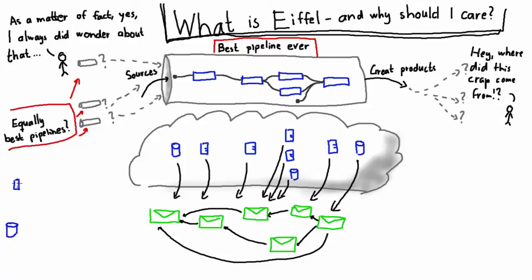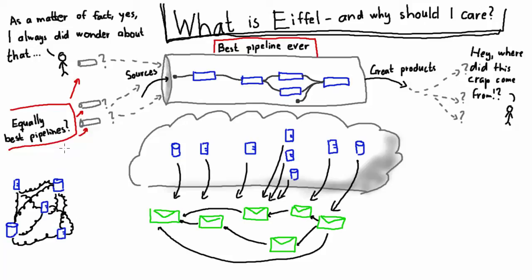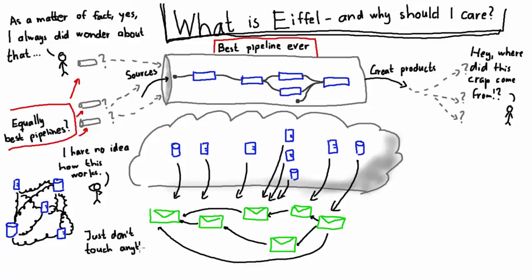If you think about continuous integration and delivery in this way, it opens up a lot of possibilities, but the use cases fall into two main categories. The Eiffel events can be used to drive the pipeline behavior. By listening to events and intelligently triggering appropriate behavior informed by those events, one can create vast, decentralized, scalable, technology-agnostic pipelines that span organizations and continents alike, without the need for fragile point-to-point integrations. And technology agnosticism is an important point — just as you need to communicate with others regardless of whether they use the same CI server as you do, you need to avoid being locked into a particular solution yourself.